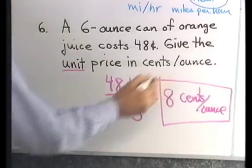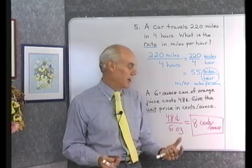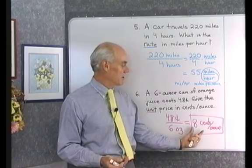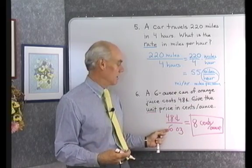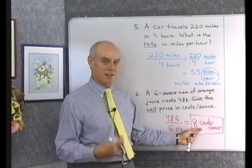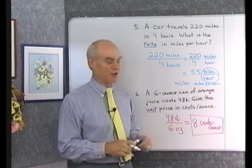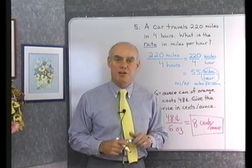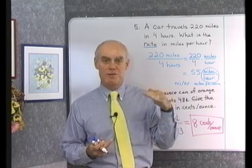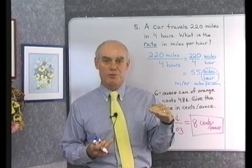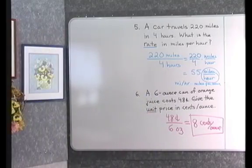That is the unit price of that can of orange juice. If I had a different size can that cost a different amount of money, I could compare its price by taking the same ratio — amount of money over number of ounces — and reducing it to lowest terms to get the unit price. It's a good way to compare items in the grocery store. So that's an introductory look at ratios, how we change ratios to fractions, and special ratios comparing two different quantities called rates, including a special rate called a unit price.